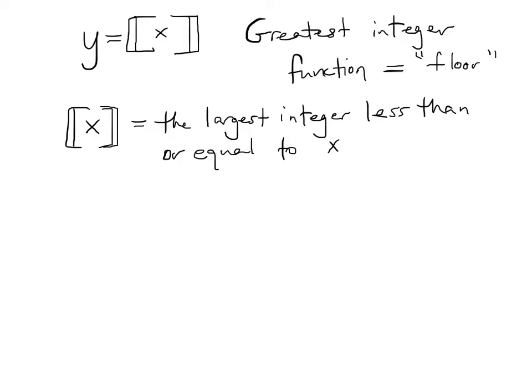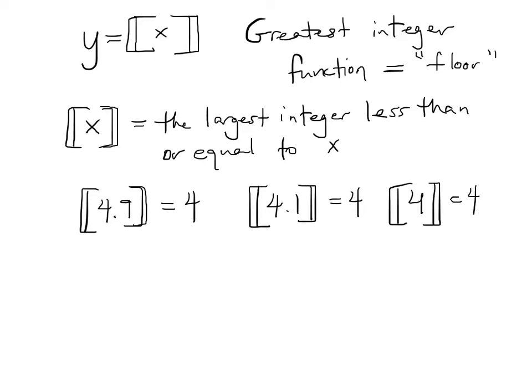It's probably easiest to just do some examples. The floor of 4.9 is 4. The floor of 4.1 is 4. The floor of 4 is 4. The floor of 3.99728 is 3, and so on. So the floor of 0.001 is 0.